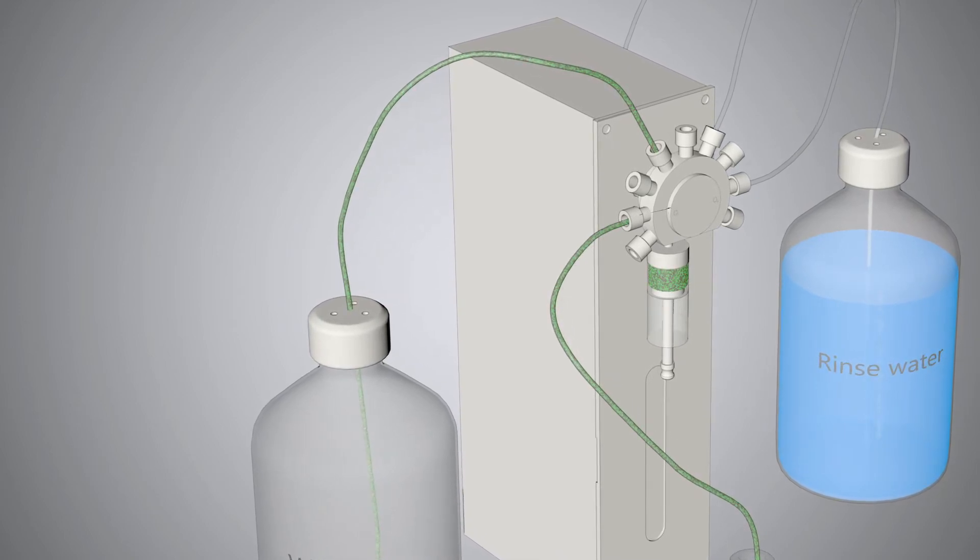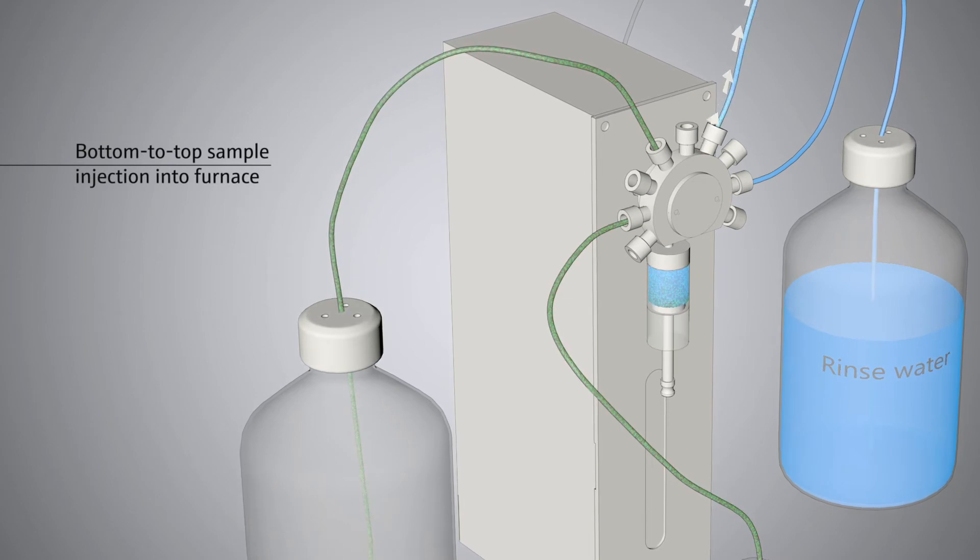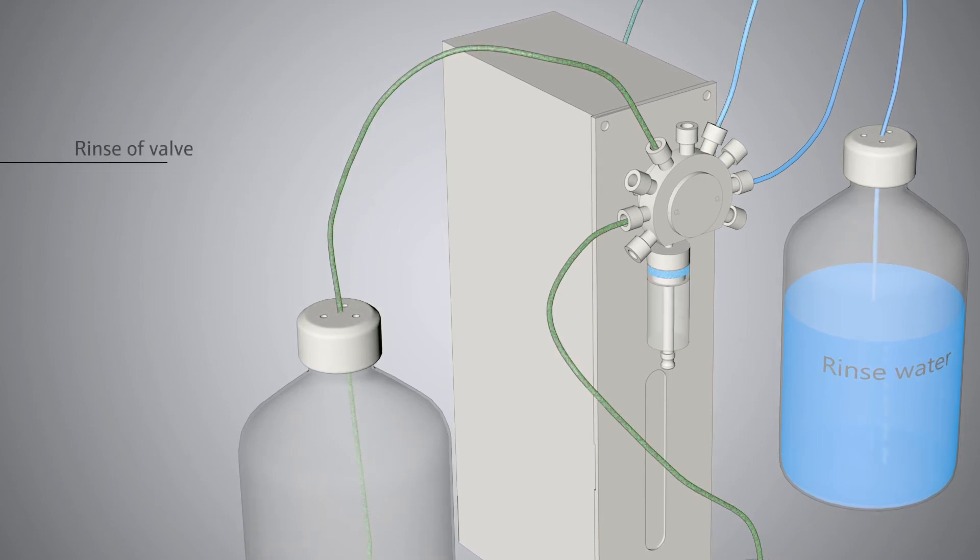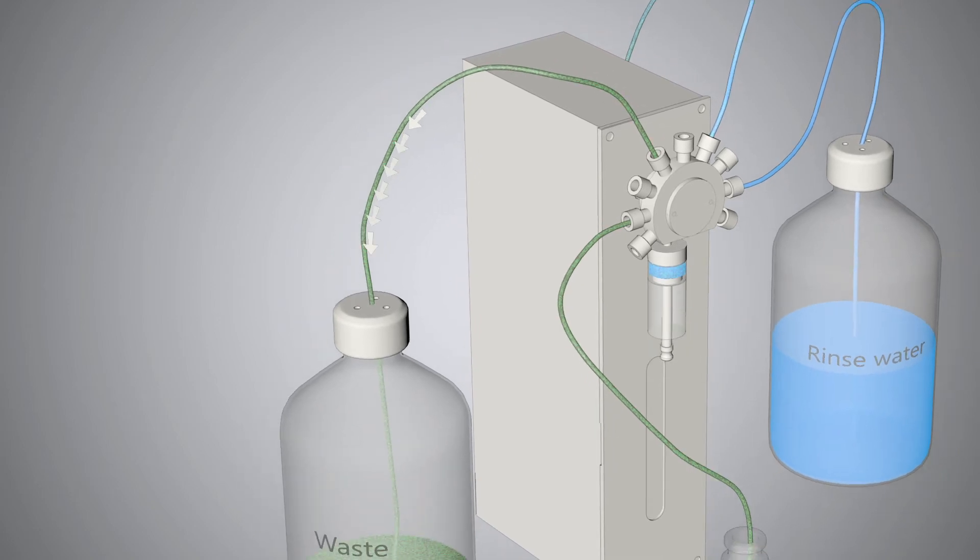Sample dilution is necessary to avoid overloading the detector or exceeding the calibration range. There is no reverse rinse after injection, thus remaining particles in the syringe lead to carryover, false results, and wear.